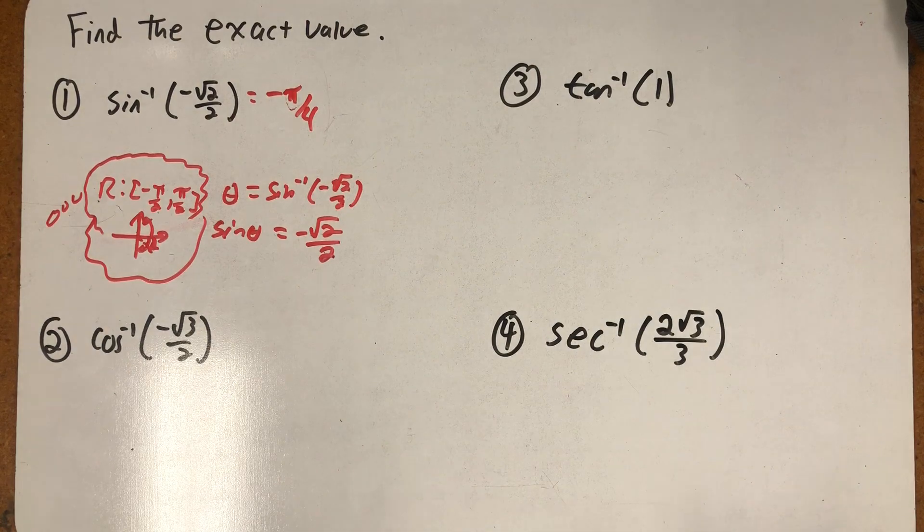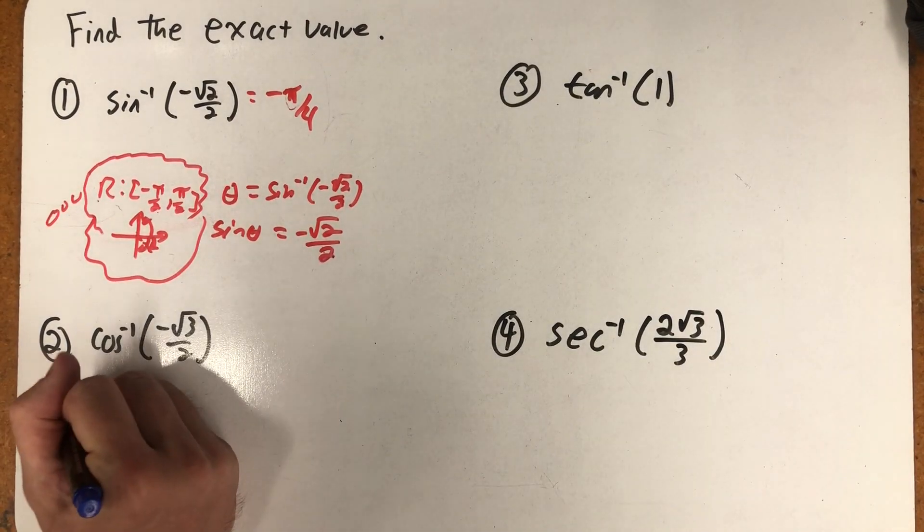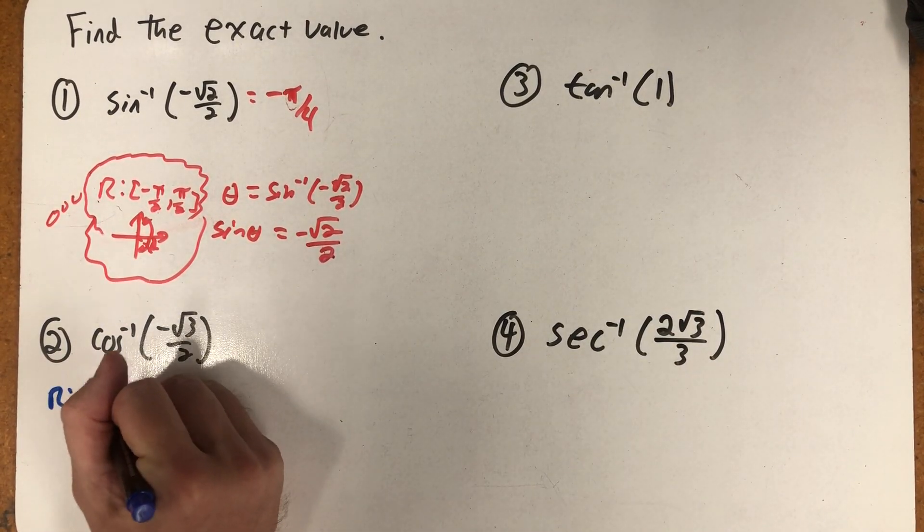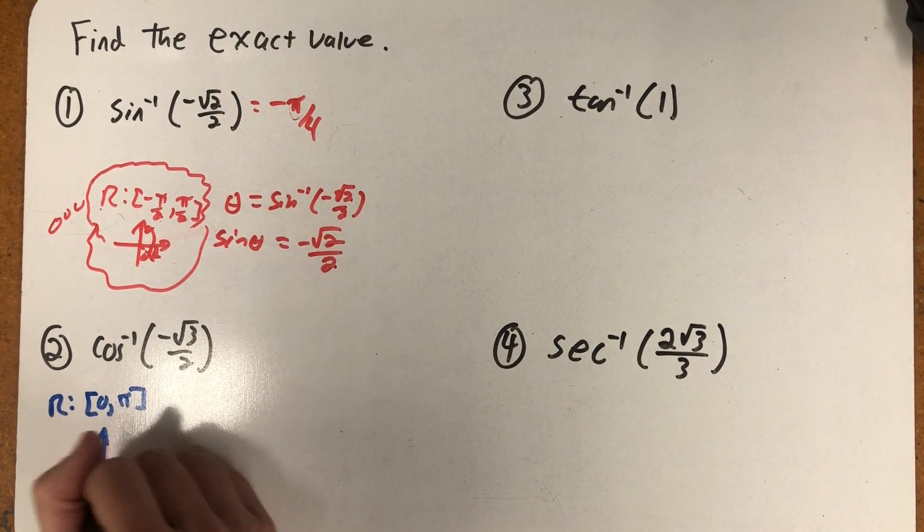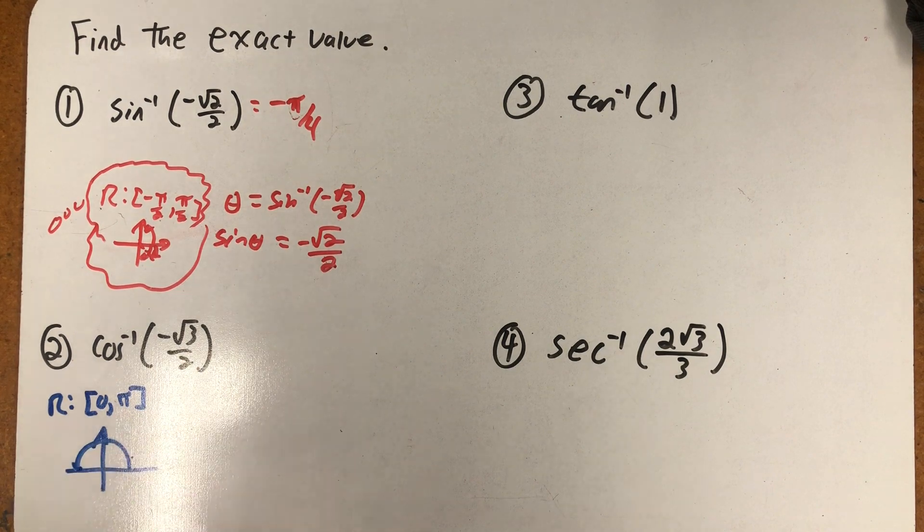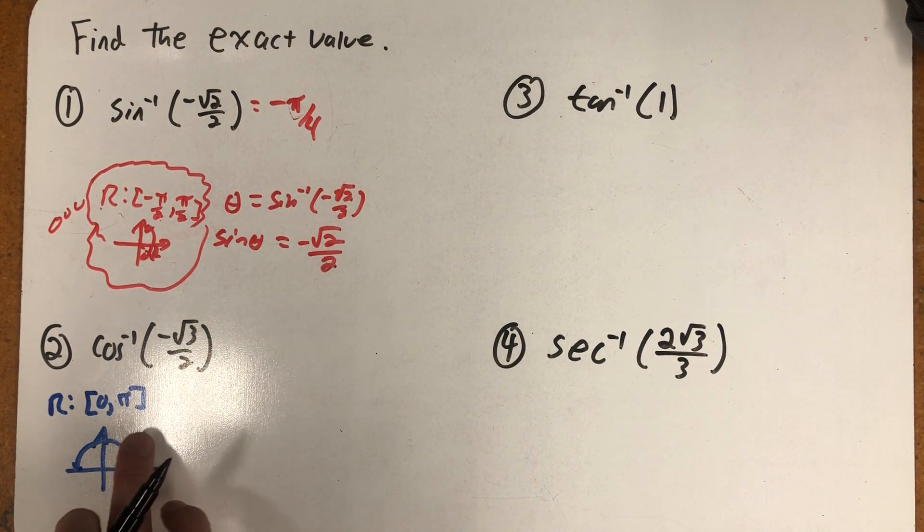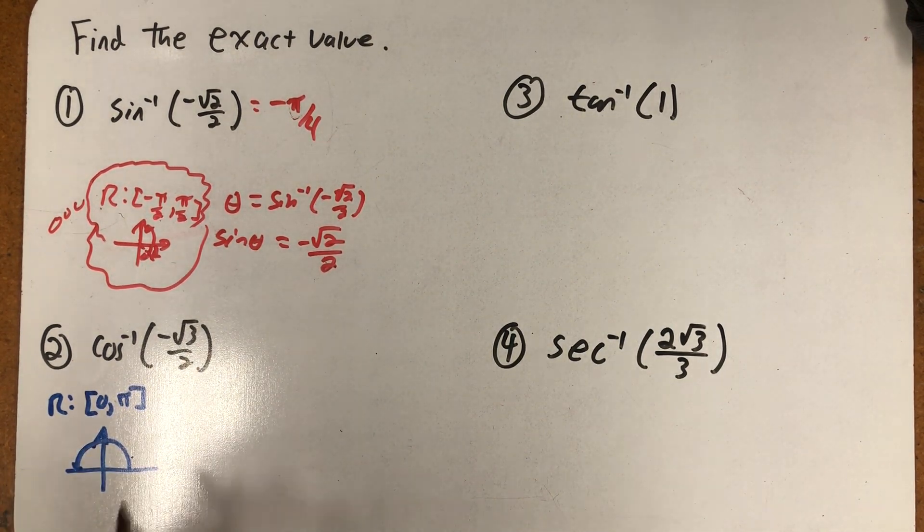So inverse cosine. If I think about inverse cosine, its range is from zero to pi, thinking about only positive angles in quadrants one and two. Cosine's positive in quadrant one and negative in quadrant two.